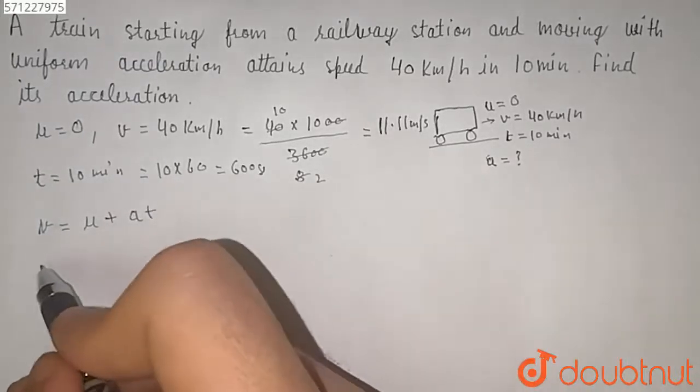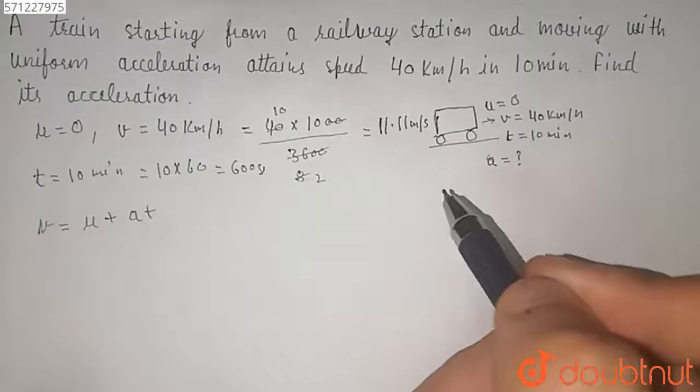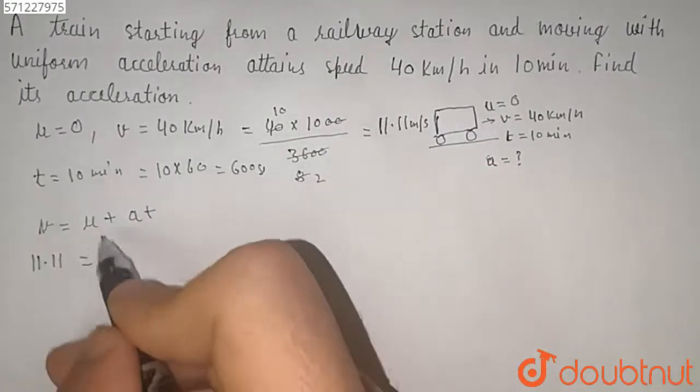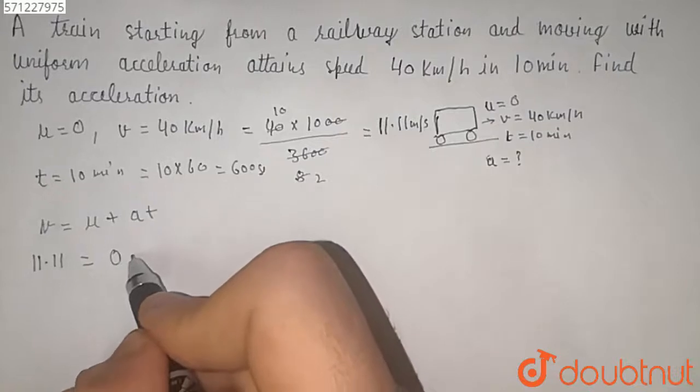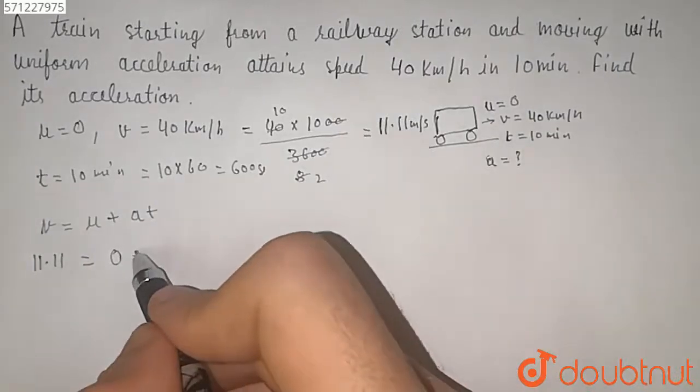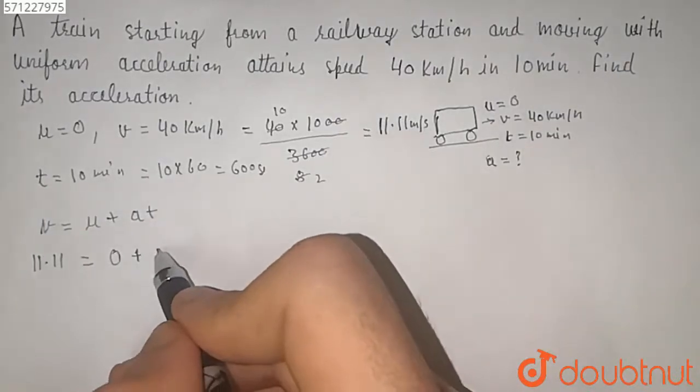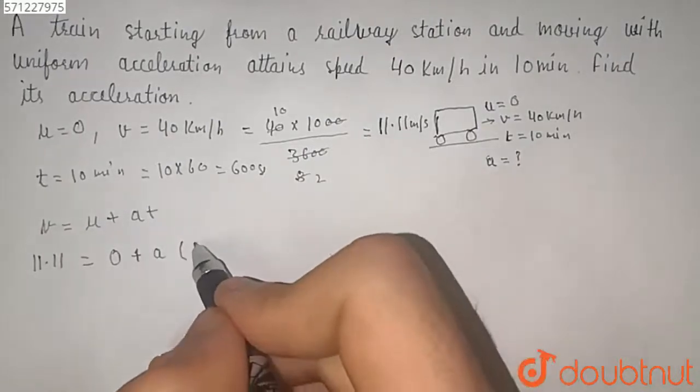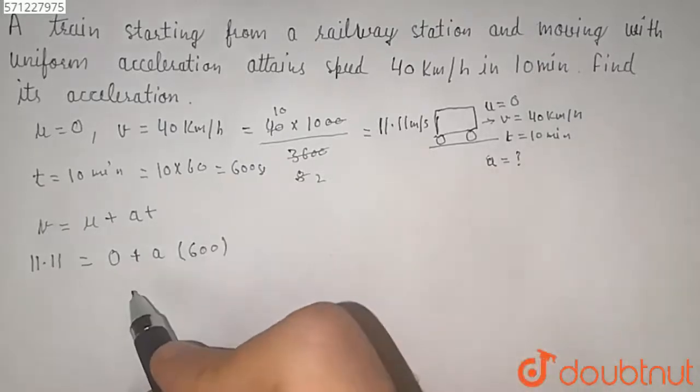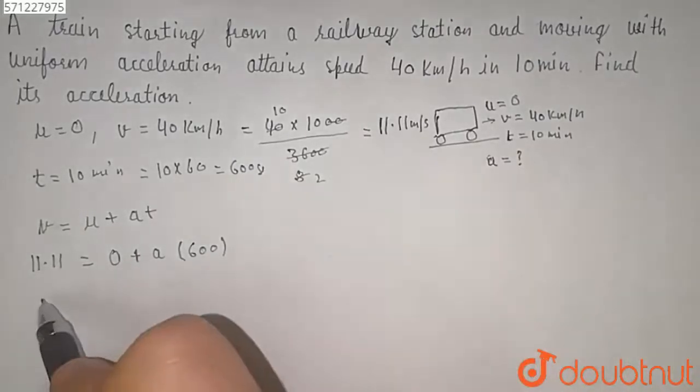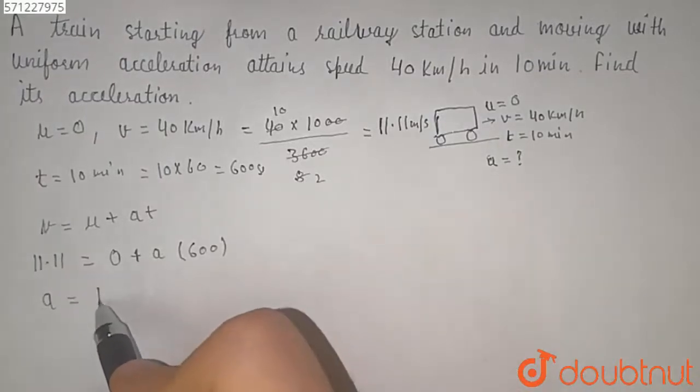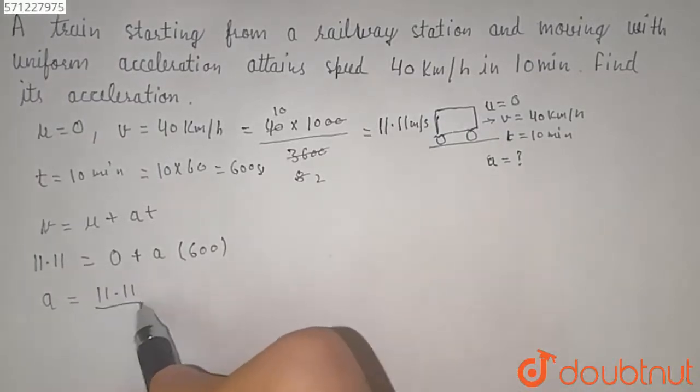So here the v, that is the final velocity, will be given to us that is 11.11, is equal to u which is equal to 0, plus a, so a here we have to find, and the time period given to us is 600 seconds. So from this we can get a, which will be equal to 11.11 over 600.